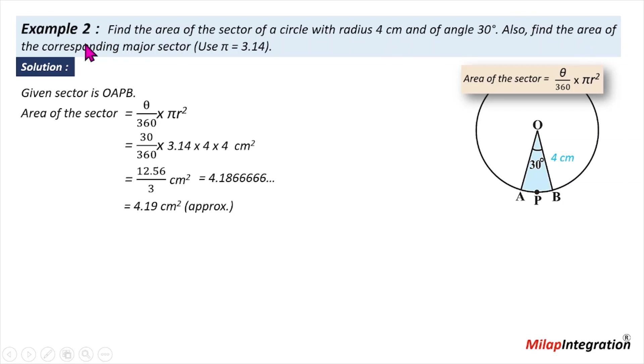Second, find the area of the corresponding major sector. Area of the circle, that means pi r square minus area of the minor sector.